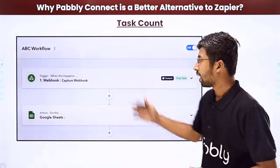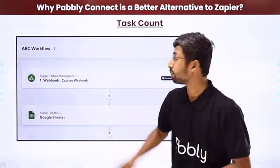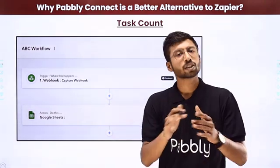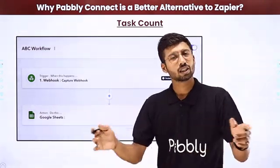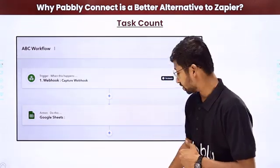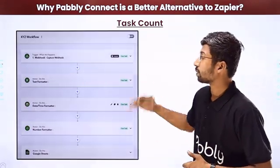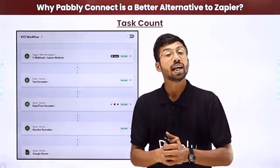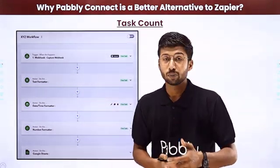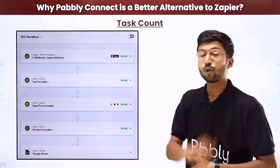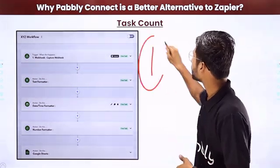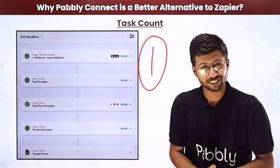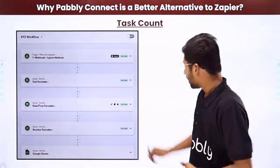As another example, a two-step integration getting data from a webhook and adding it to Google Sheets consumes one task in both platforms. But if you add steps like text formatter, date-time formatter, or number formatter, the entire automation still only consumes one task in Pabbly Connect, because all internal tasks are completely free.